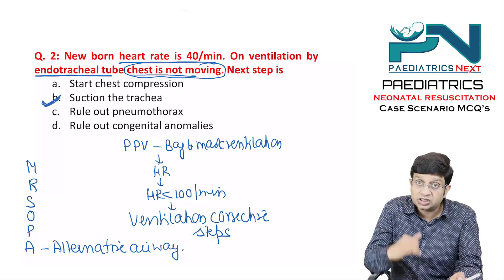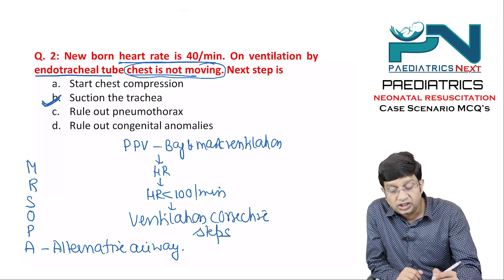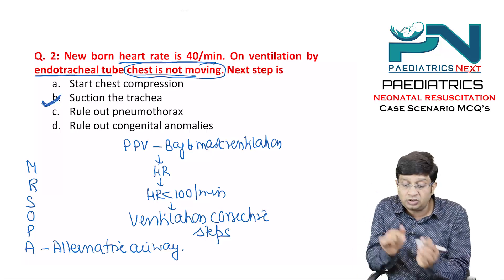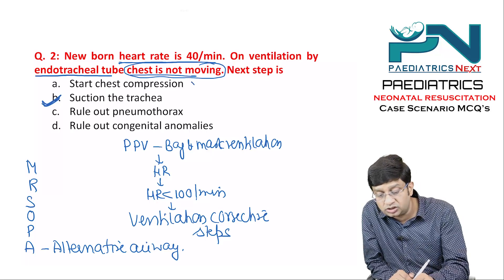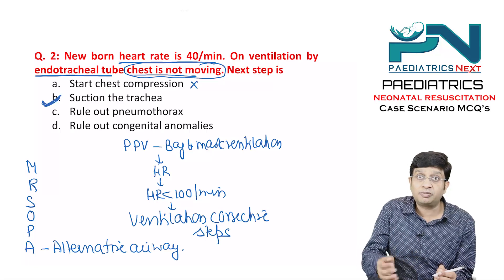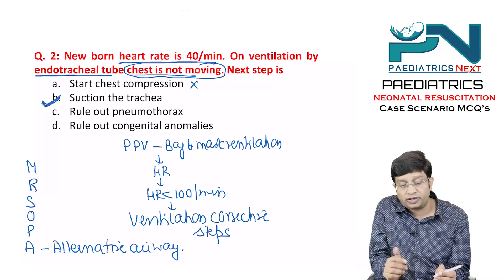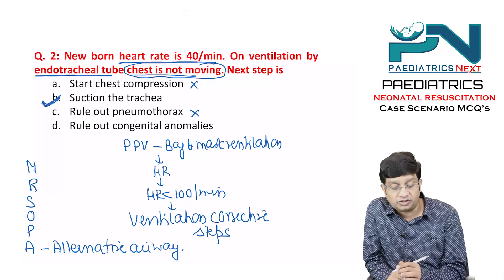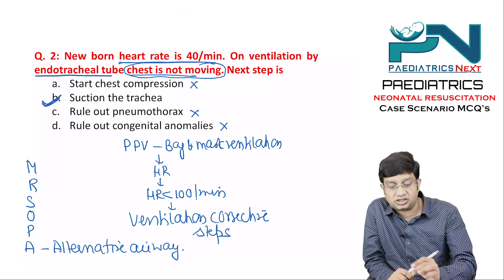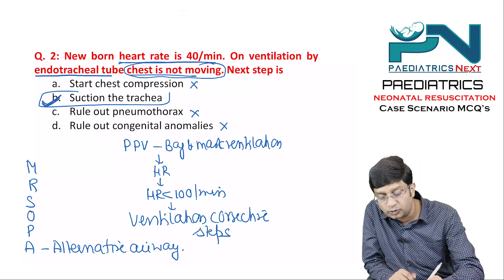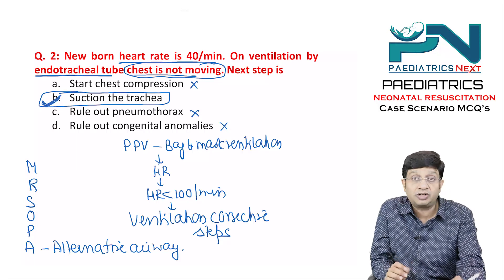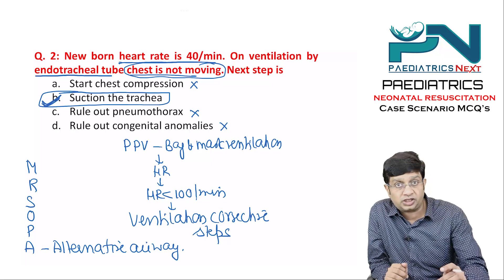If the question had stated the heart rate was not improving despite endotracheal intubation, you would consider chest compressions. If decreased breath sounds were mentioned, you might think of pneumothorax. Ruling out congenital anomalies does not carry significance here. The most appropriate answer is suction of the trachea, because the key finding given is that the chest is not moving.